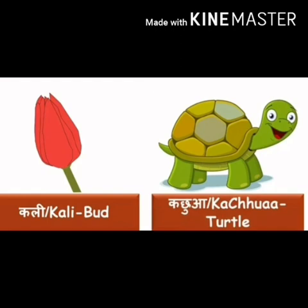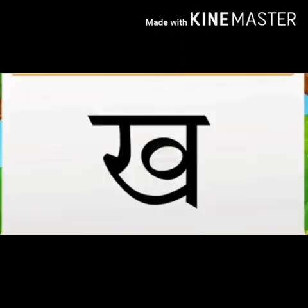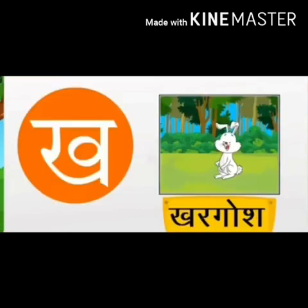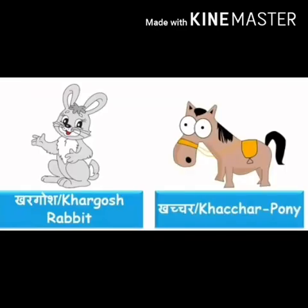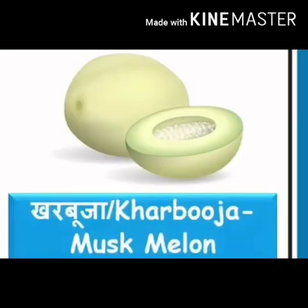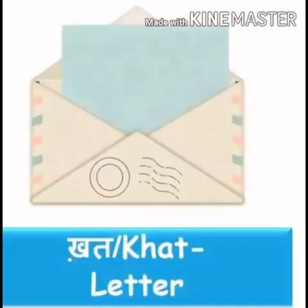ख। अब हम ख पढ़ेंगे। एक आधा गोल, उसको जोड़कर नीचे की तरफ एक आधा गोल, उसको खड़ी रेखा जोड़ना, ऊपर से सीधी रेखा — तो बन गया आपका ख। ख से खरबूज़ा। ख से खजूर। ख से खच्चर। ख से खरबूज़ा। ख से खच्च।